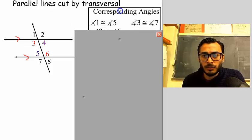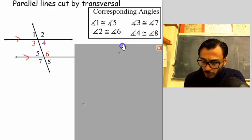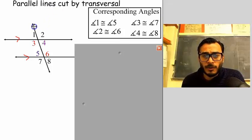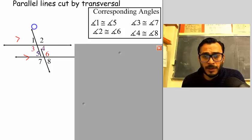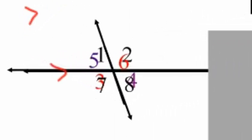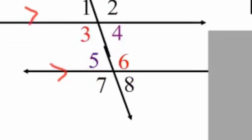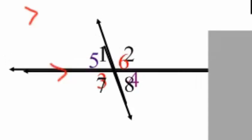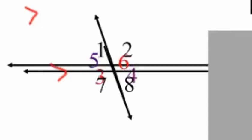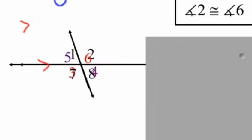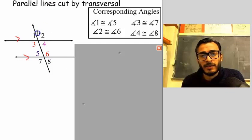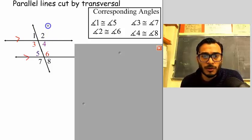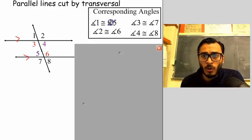So we looked at corresponding angles. Think about it this way: if I were to place this right on top of that, you could see that angle two corresponds to angle six, angle one corresponds to angle five, angle three corresponds to angle seven, and angle four corresponds to angle eight. All the obtuse angles are equal to each other and all the acute angles are equal to each other. Corresponding angles are equal.